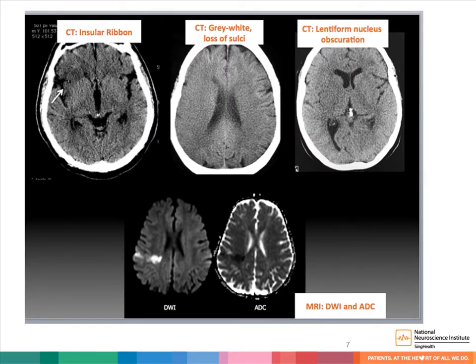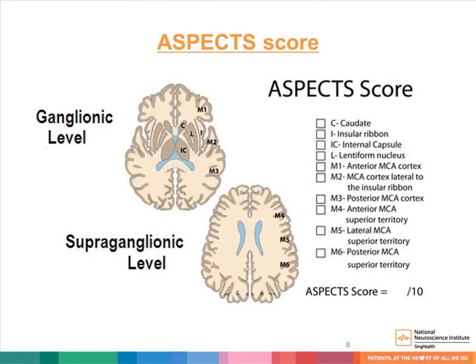Here are some examples of early ischemic change. In the top row, we see CT findings of loss of the insular ribbon, loss of gray-white differentiation, loss of the sulci, and obscuration of the lentiform nucleus. Below are MRI features of acute ischemic change with hyperintensity on DWI and corresponding hypointensity on ADC sequences. The ASPECTS score allows one to estimate early ischemic change — the MCA territory is divided into 10 sections. Each normal patient has an ASPECTS score of 10, and for each area affected, one point is deducted.